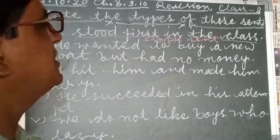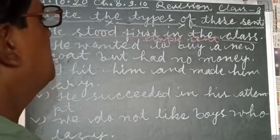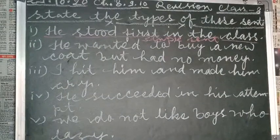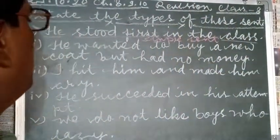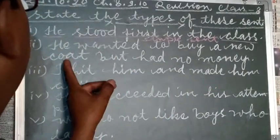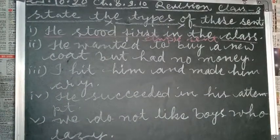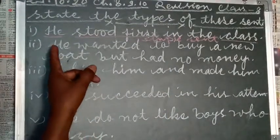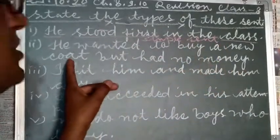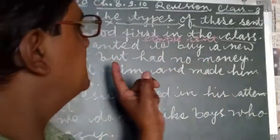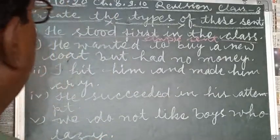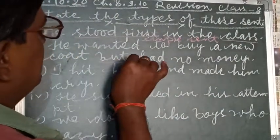Number two: he wanted to buy a new coat, but had no money. So what are we looking? In it, 'he wanted to buy a new coat' is one coordinate clause, and 'had no money' — meaning he had no money — is another coordinate clause. So here it is compound, combined by the coordinate conjunction 'but'.